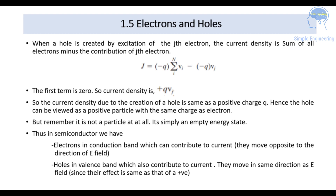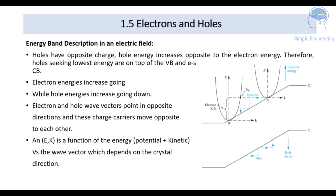The current density due to the creation of a hole is the same as that of a positive charge q, so the hole can be viewed as a positive particle with the same charge magnitude as an electron — though it is not a real particle but simply an empty energy state. In a semiconductor, electrons in the conduction band contribute to current by moving opposite to the direction of the electric field, while holes in the valence band also contribute to current but move in the same direction as the electric field.